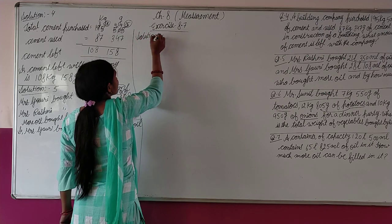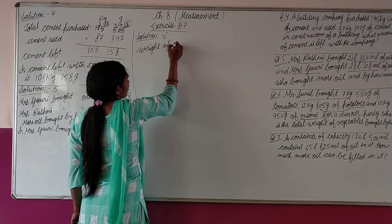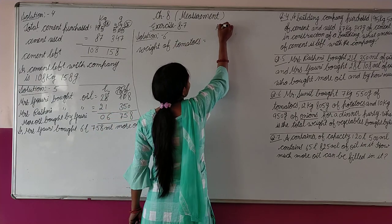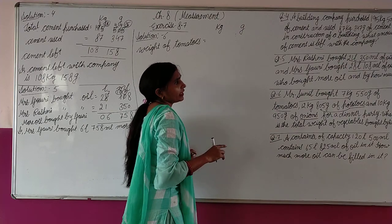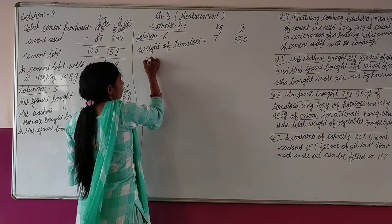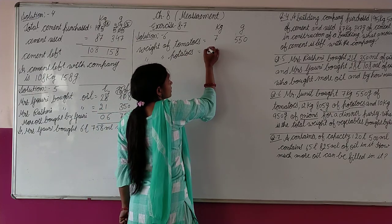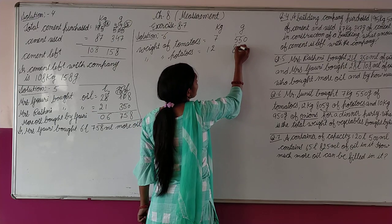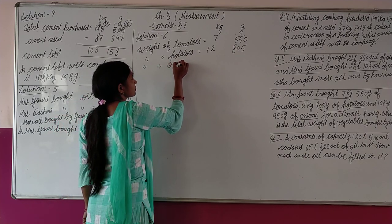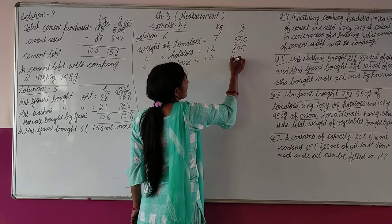Solution, question number 6. Weight of tomatoes: 7 kilogram 550 gram. Weight of potatoes: 12 kilogram 805 gram. Weight of onions: 10 kilogram 950 gram.